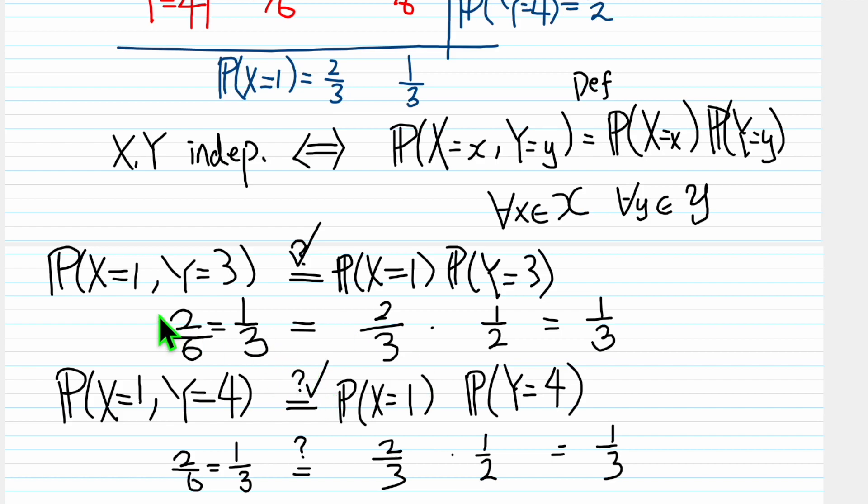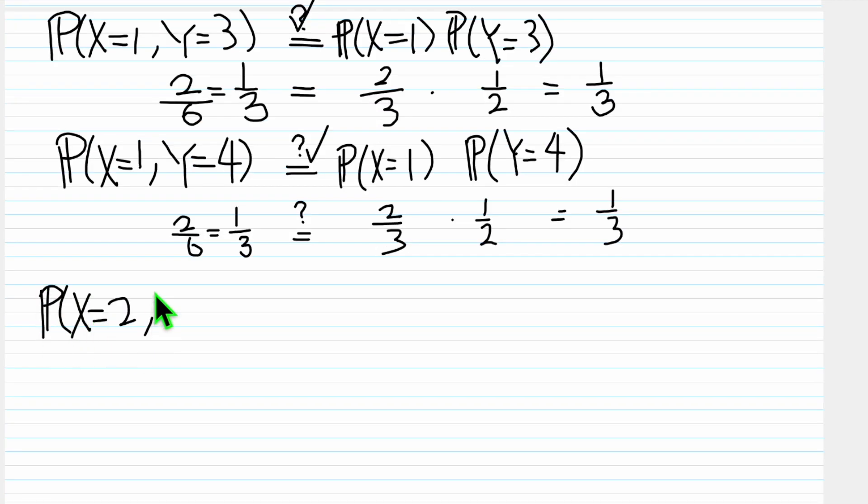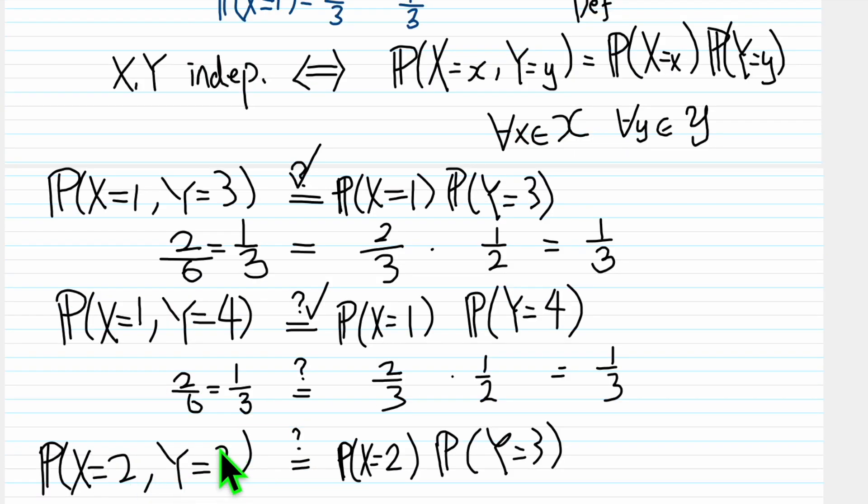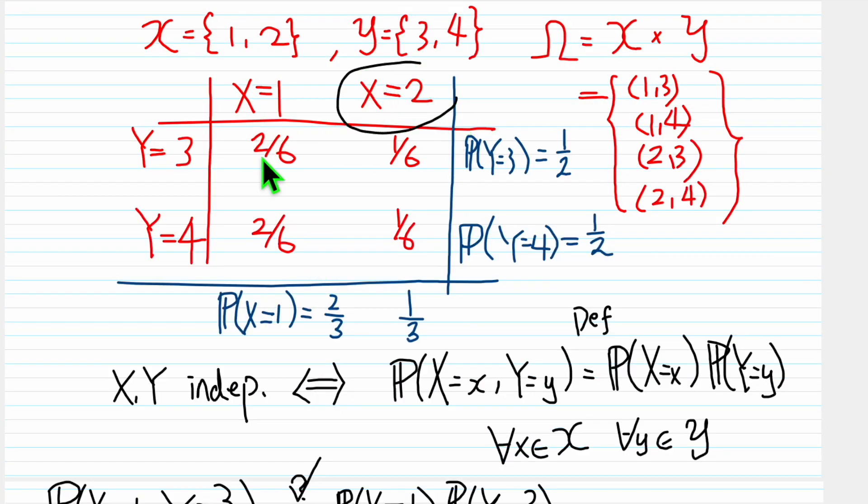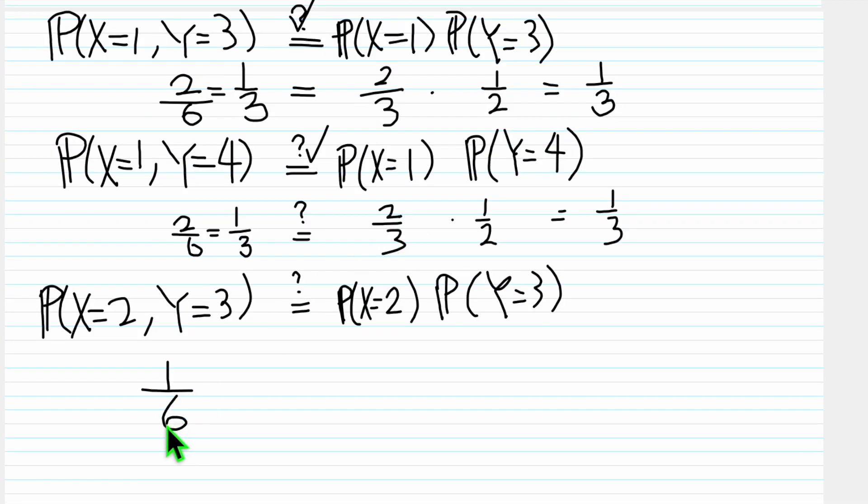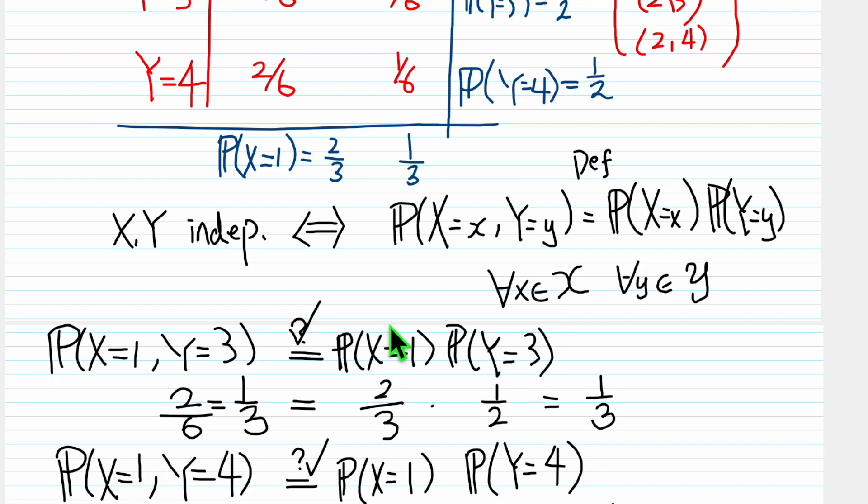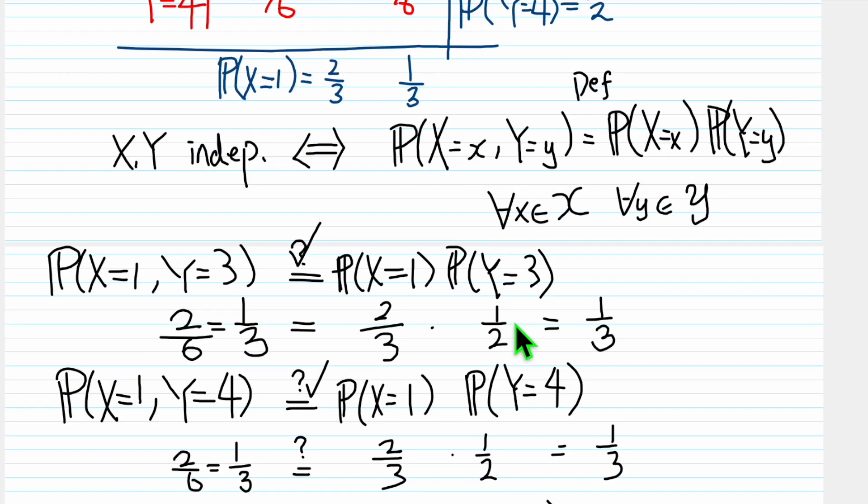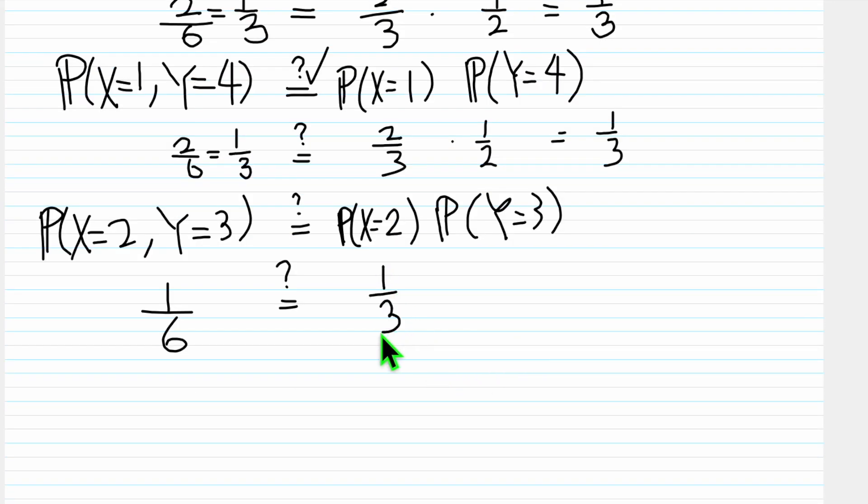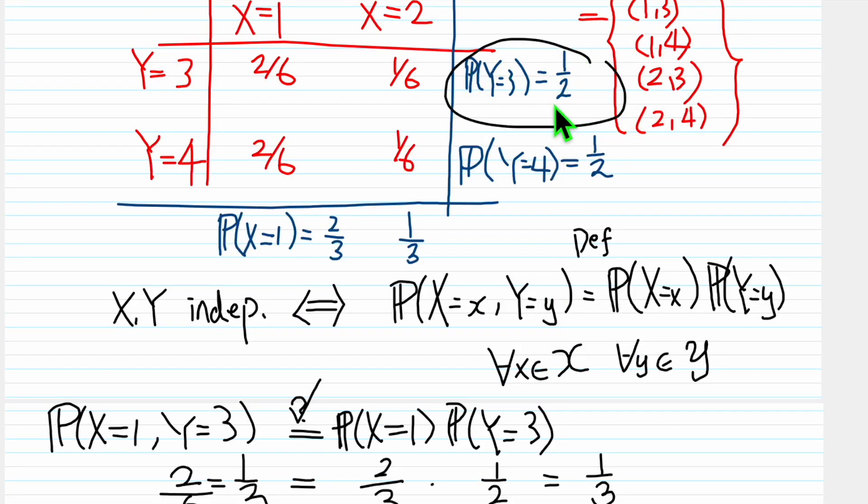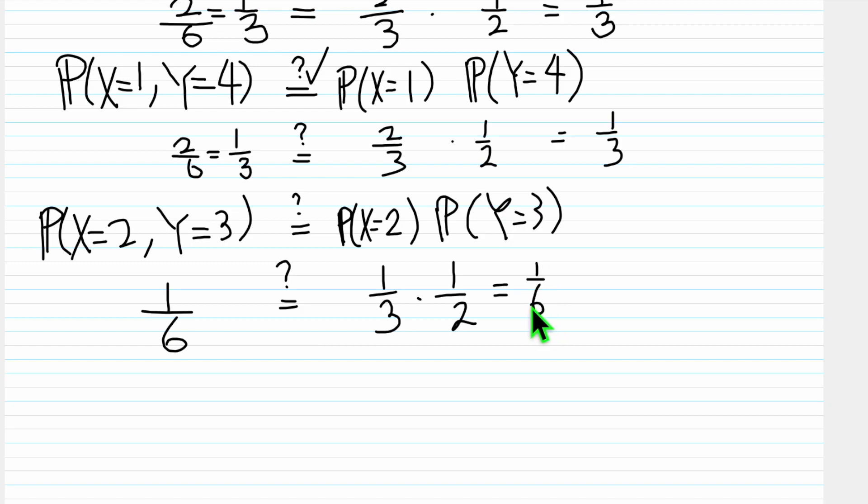Then what's next? We need to check the X=2 case. So P(X=2, Y=3), this one, 1/6. Is it equal to P(X=2) times P(Y=3)? X is 2, this one, 1/3. Now we want P(Y=3), P(Y=3) is this one, which gives 1/6, yes, so this is yes. Lastly, last guy.